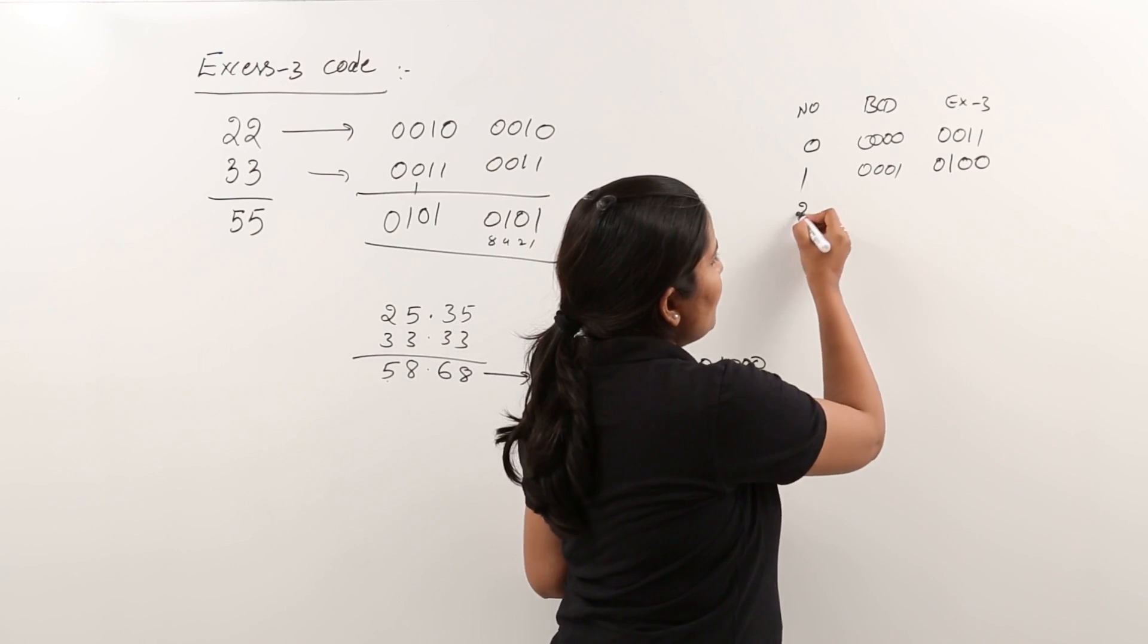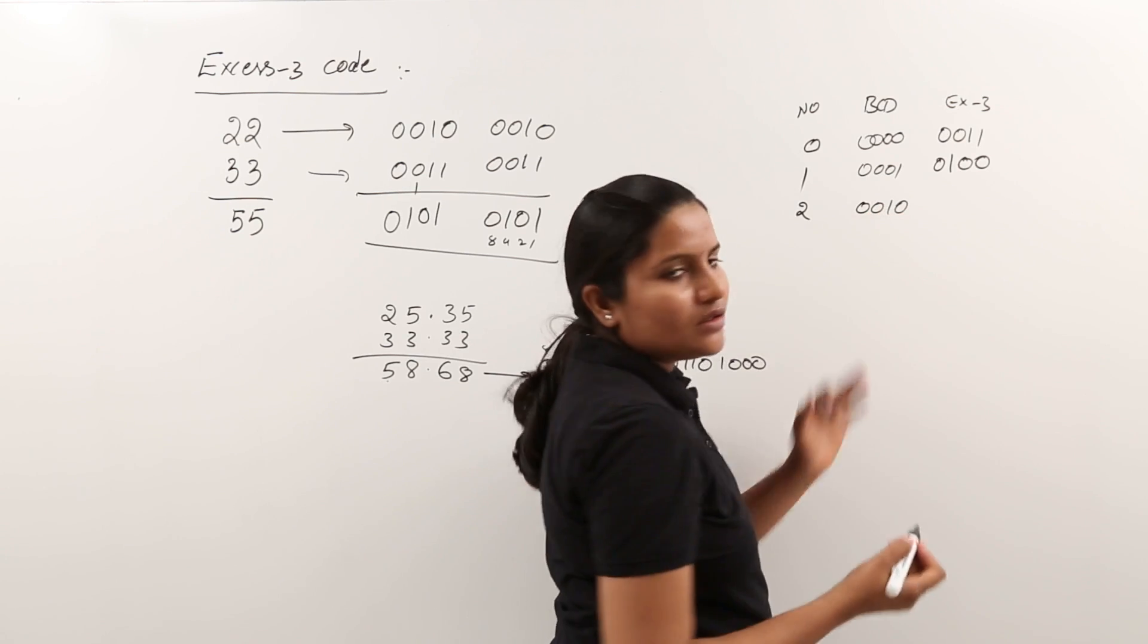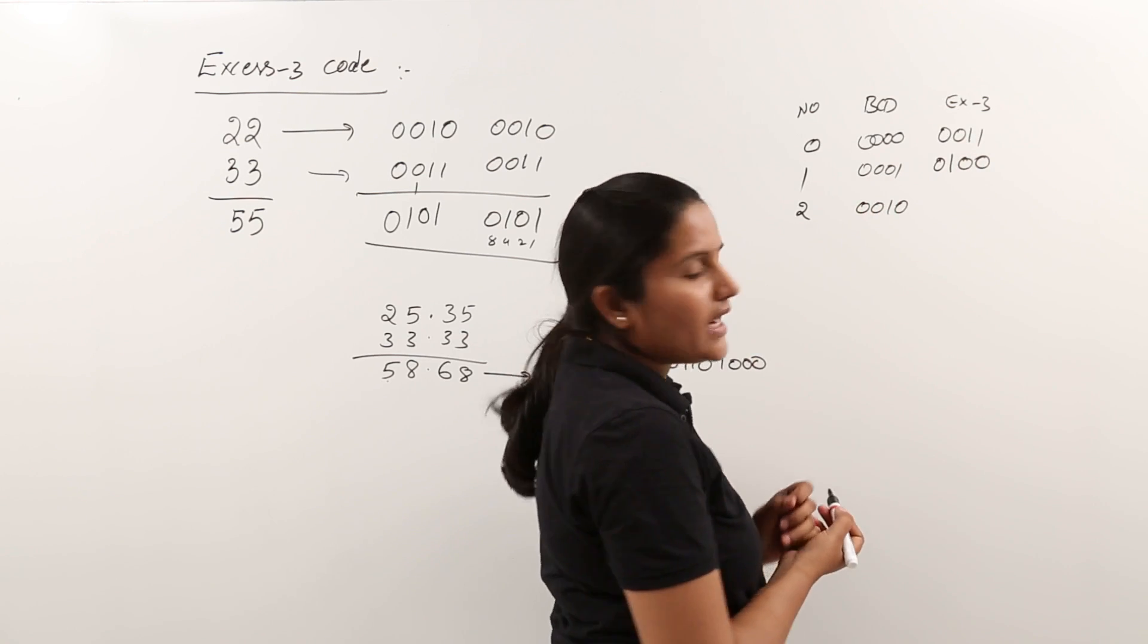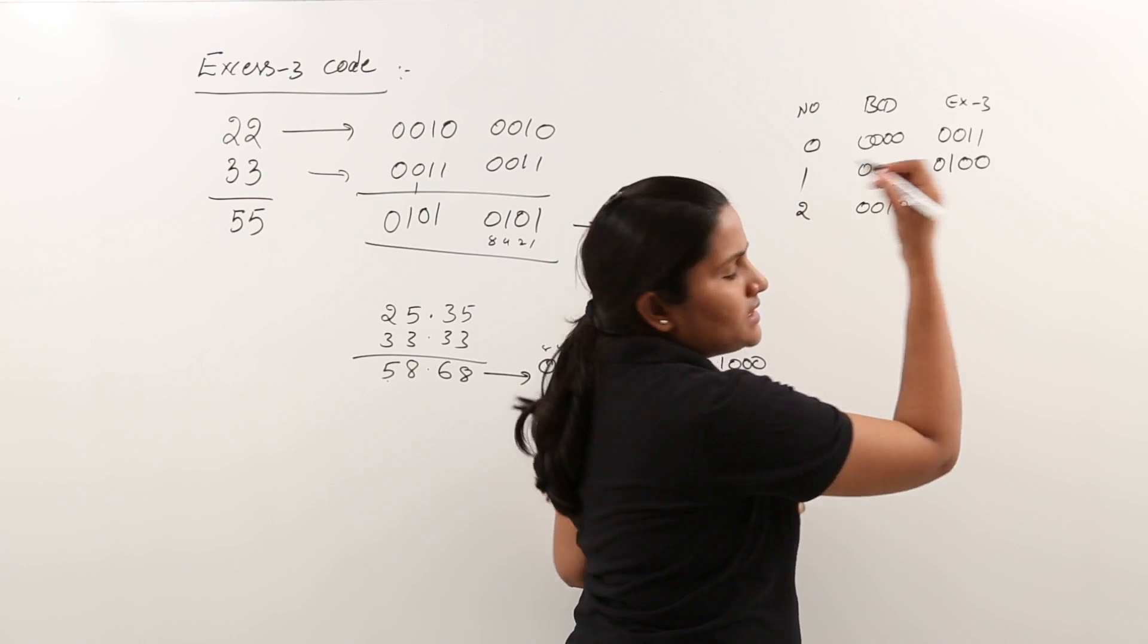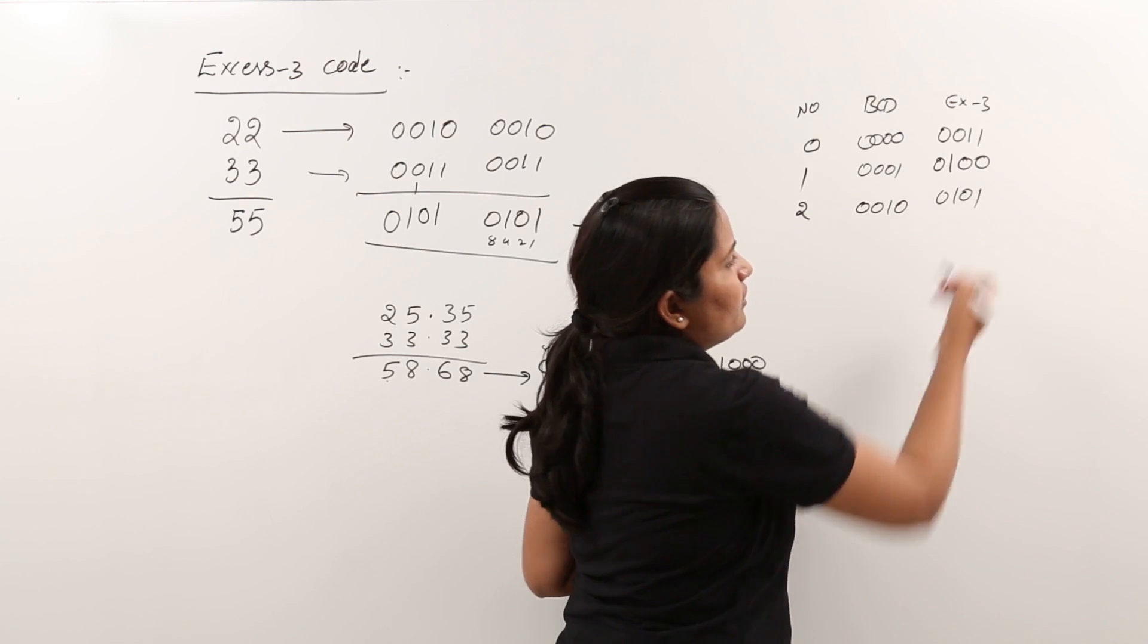Adding 3 and whatever value got after adding 3, for that we are writing binary out of BCD code. So here 2, for 2. So 2 plus 3 means 5. For 5 you have to write.